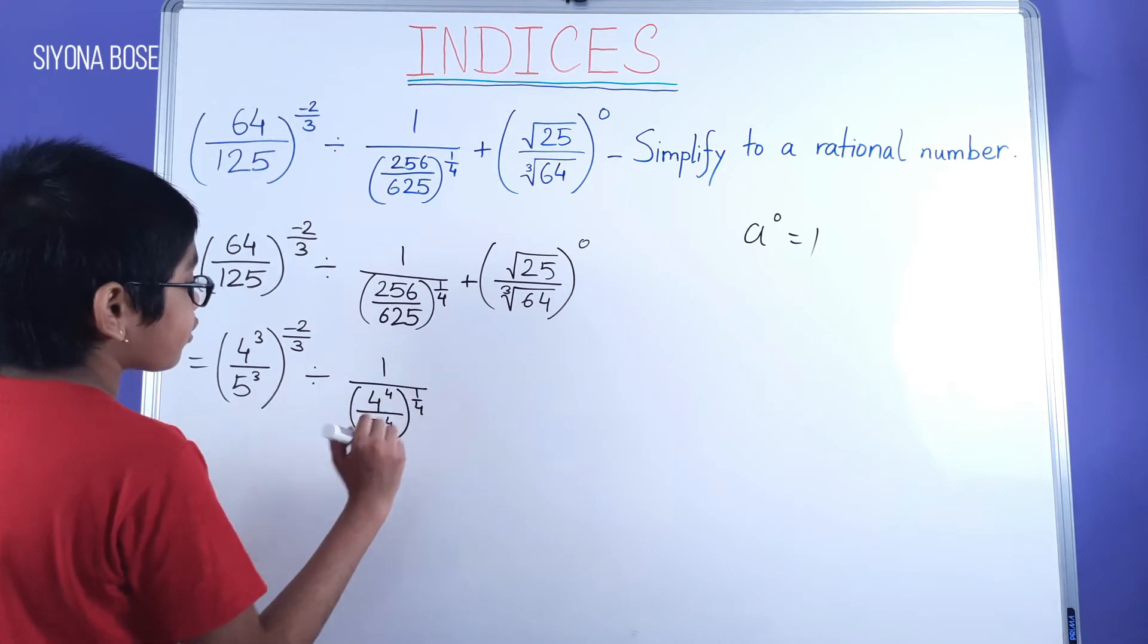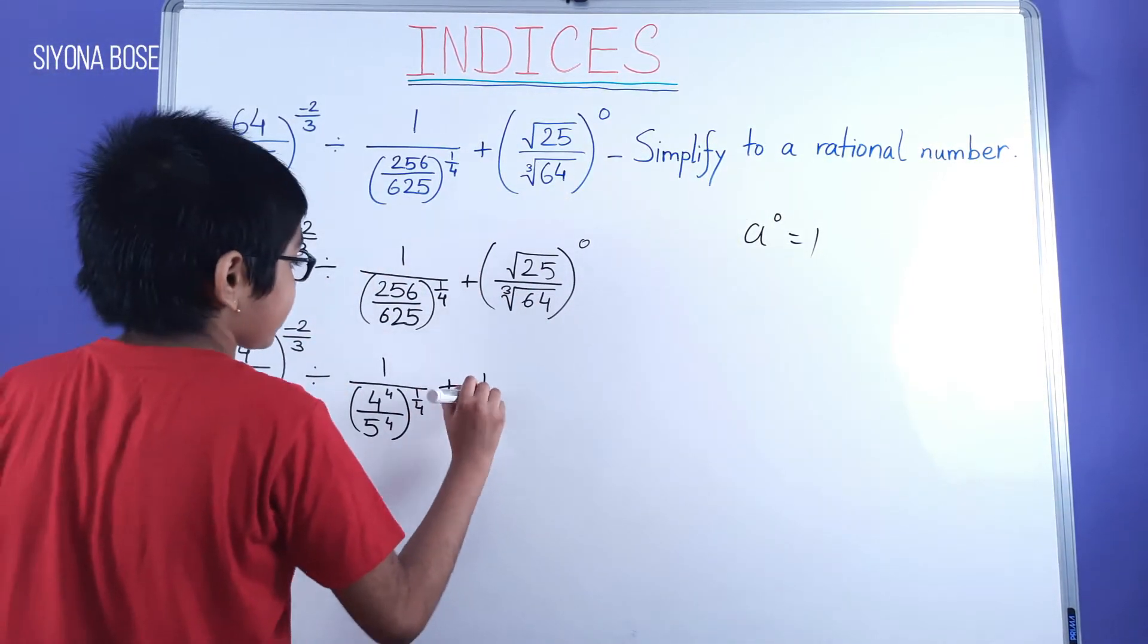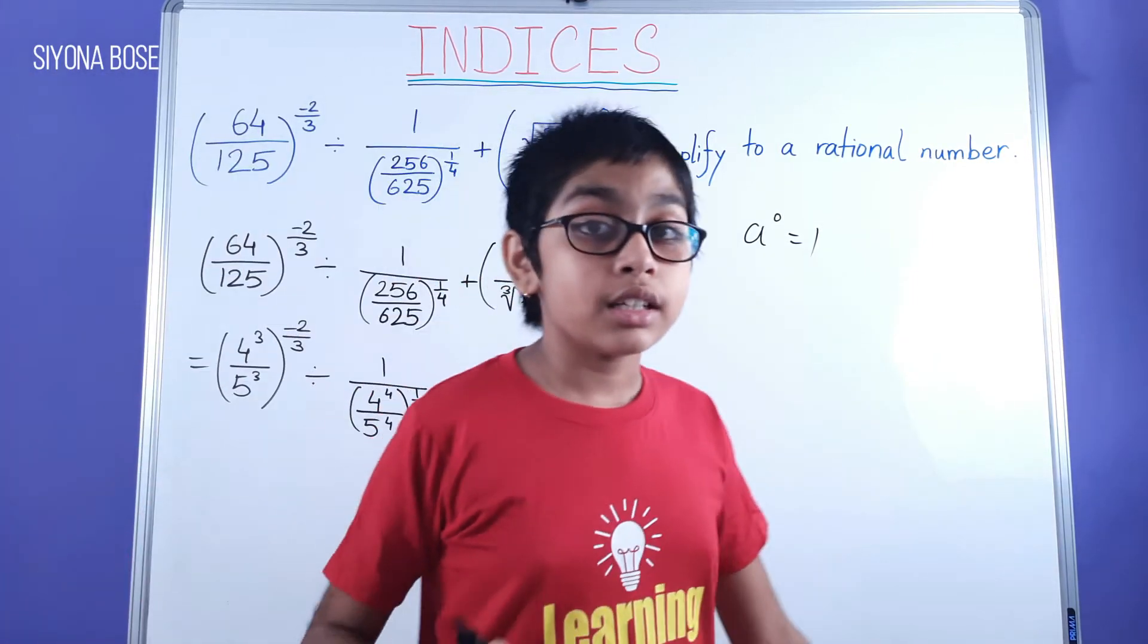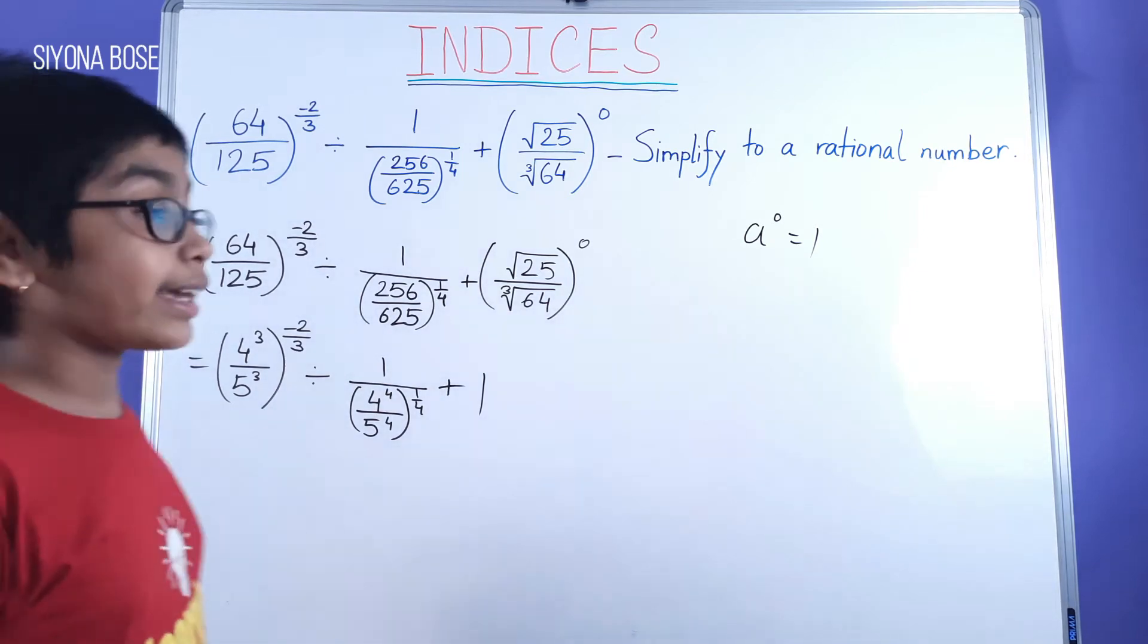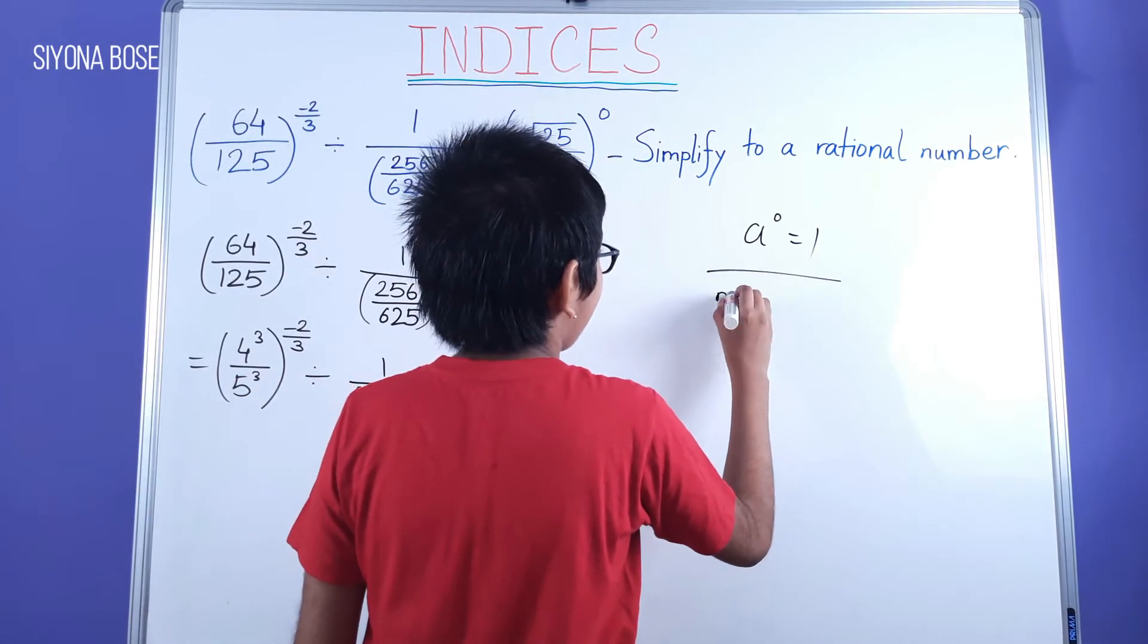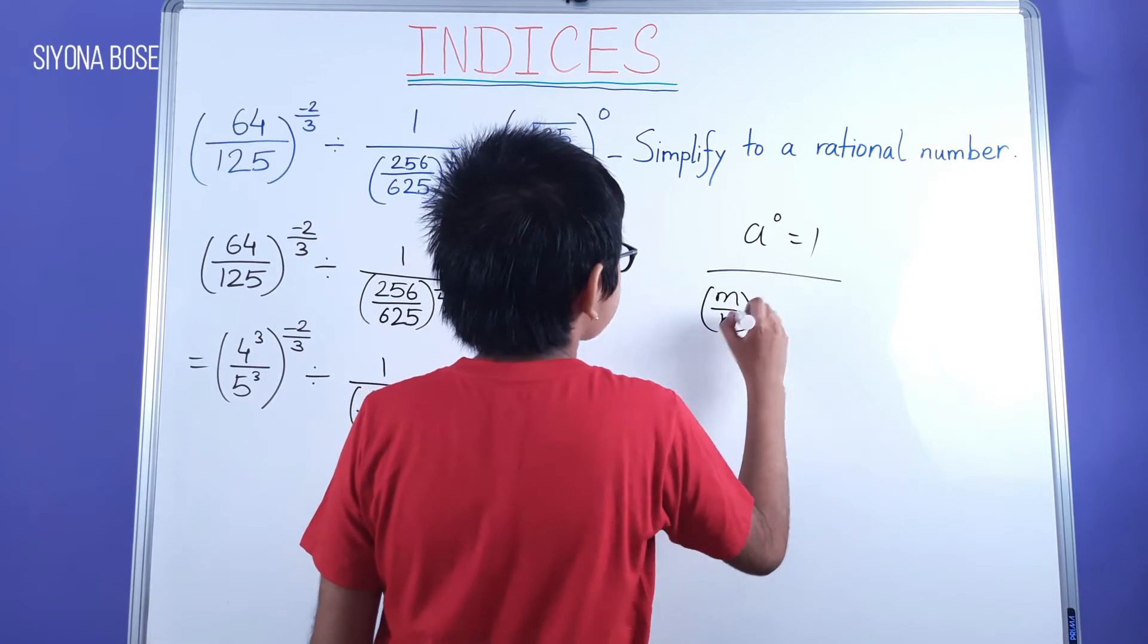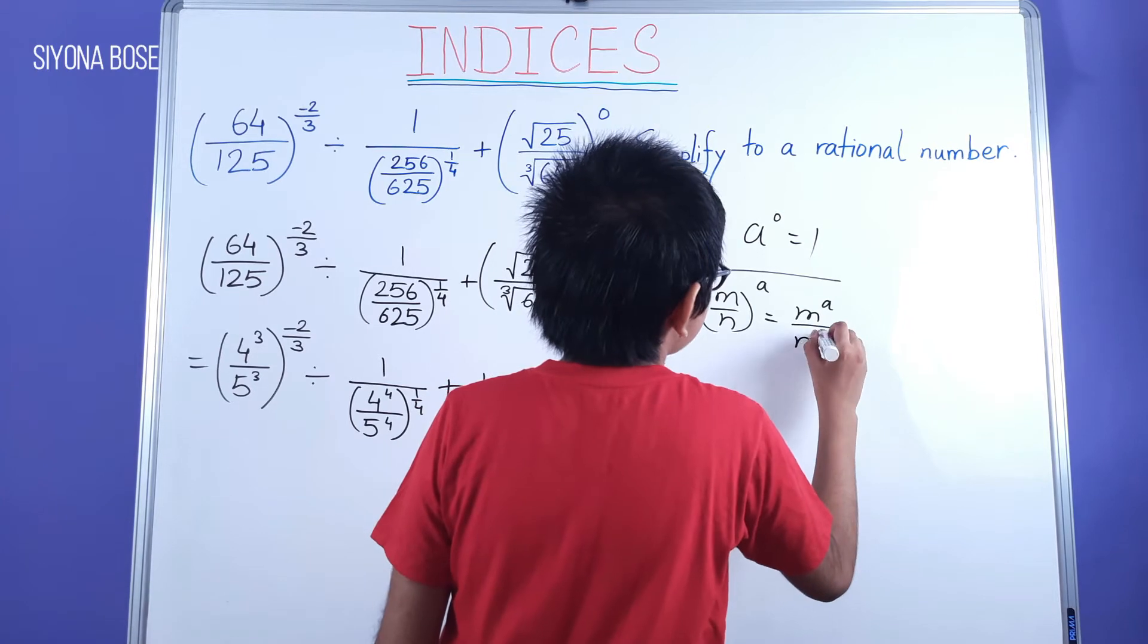Hold the power of 1 by 4, and here it's plus 1. And now we can continue with however we have to do this. And we know that if it's like m by n, hold the power of a, it's equal to m to the power of a by n to the power of a.